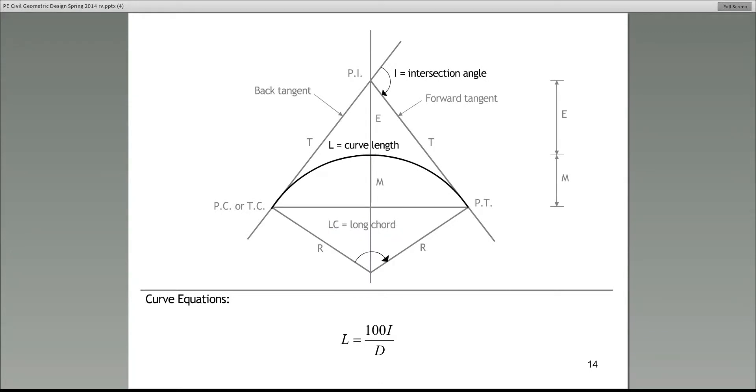Now this is the last equation we are looking at, and this is a very important equation, because no matter what the problem is and what they ask you to do, more than likely you have to use this equation first before you use another one. So pay very close attention to this. This gives you a relationship between L, and L represents the length of the curve. Make a note of it. Just the letter L, capital L, is the length of the curve, and that is related to I, intersection angle, and D, degree of curvature, through this equation. So L is equal to 100 times I divided by D. Now both I and D, those are angles, and they are in terms of degrees.